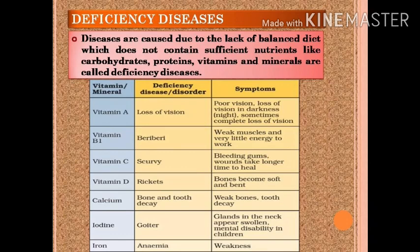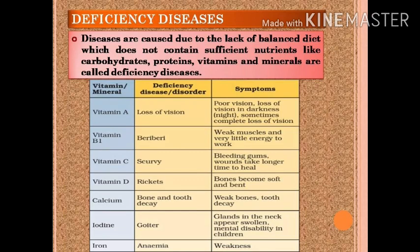Here in the chart we will learn about some deficiency diseases. With a deficiency of Vitamin A, we can have loss of vision. The symptoms are poor vision and loss of vision in darkness — that means night blindness — and sometimes complete loss of vision. With a deficiency of Vitamin B1, we can have beriberi, where weak muscles and very little energy to work can be seen. With a deficiency of Vitamin C, we can have scurvy, with symptoms of bleeding gums and wounds taking longer to heal. With a deficiency of Vitamin D, we can have rickets, where bones become soft and bent.